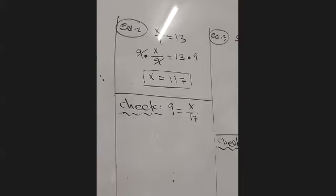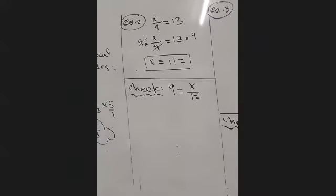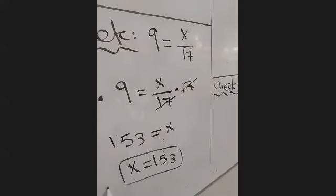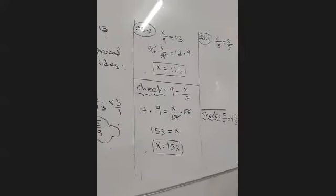Let's do the check together. The student works it: rewrite x over 9 equals 13, multiply by 9 on both sides using dot notation, giving x equals 9 times 17, which is 153. So x equals 153. Copy the check after example two.